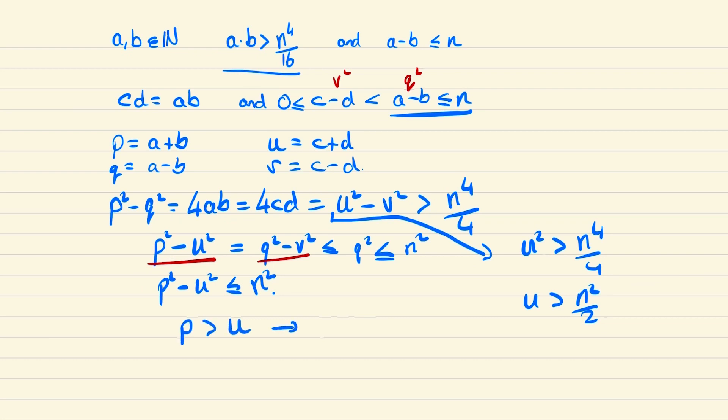So we could write that p is at least u plus 1 and hence p squared minus u squared will be at least u plus 1 squared minus u squared which is 2u plus 1 but from the fact that u is greater than n squared over 2 we know that this will be greater than n squared plus 1.